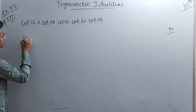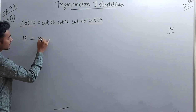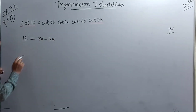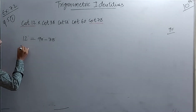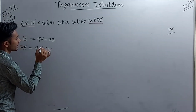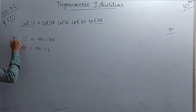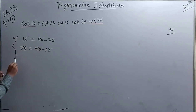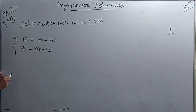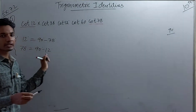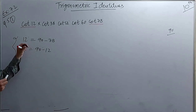We can expand 12° as (90° - 78°), and 78° can be written as (90° - 12°). So either we convert cot 12° into cot(90° - 78°), or we convert cot 78° into cot(90° - 12°). We choose one of the two.